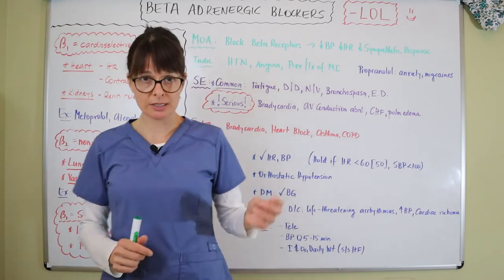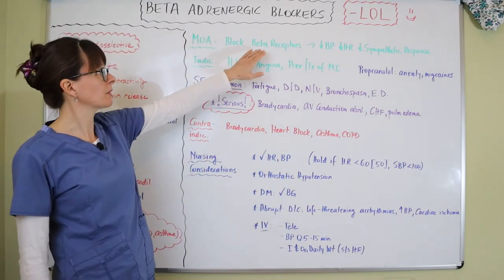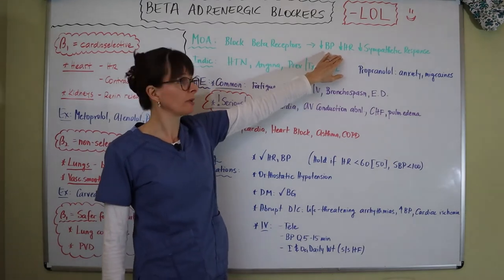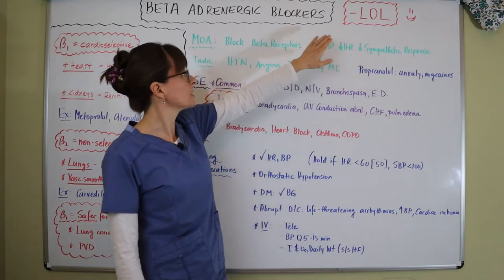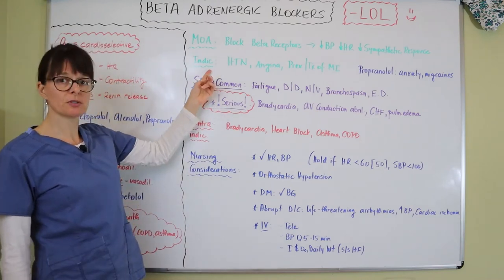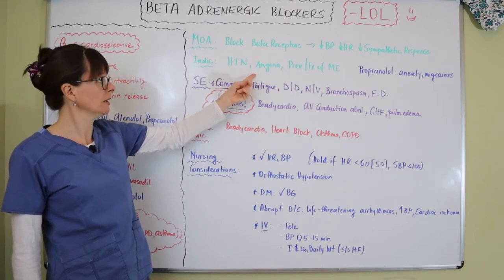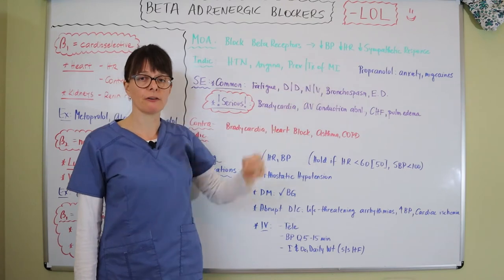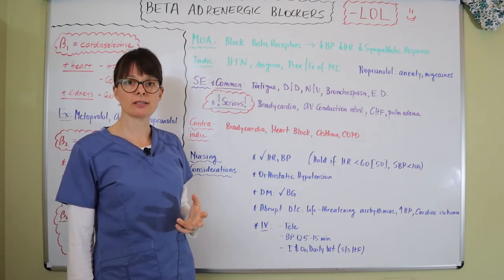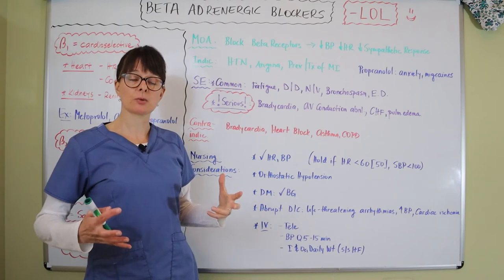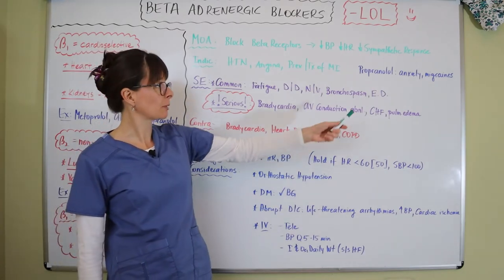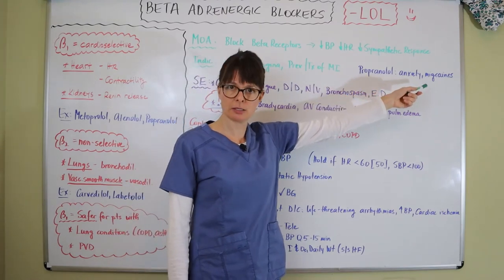Both beta 1 and beta 2 blockers work by blocking beta receptors, leading to a decrease in blood pressure, heart rate, and overall sympathetic response. Indications include hypertension, angina, and the prevention and treatment of myocardial infarction. Beta blockers are often present in advanced cardiac life support (ACLS) protocols. Propranolol is a special case — it is also used for treatment of anxiety and migraine headaches.